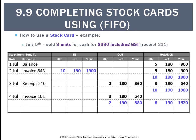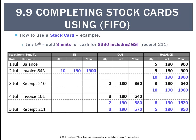We then sold 3 units for cash at $330 including GST. Applying first in, first out, you can see the only items left on hand are the $190 units. Since there are no $180 units remaining, we don't need to apply FIFO across layers — it's just what we have on hand. So in the out column, we record 3 units at $190, leaving a balance of 5 units at $190 for a total of $950.